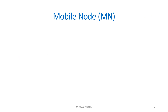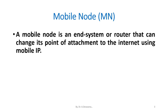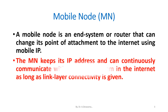Mobile node (MN): A mobile node is an end system or router that can change its point of attachment to the internet using mobile IP. The MN keeps its address and can continuously communicate with any other system in the internet as long as link layer connectivity is given.